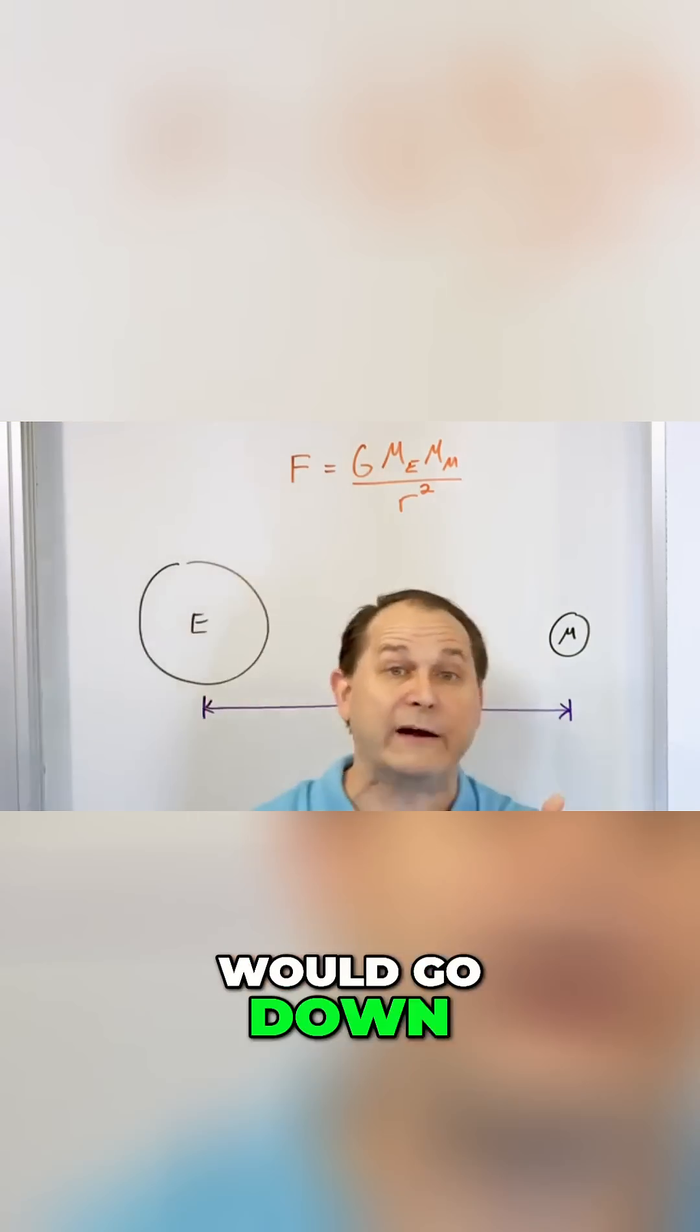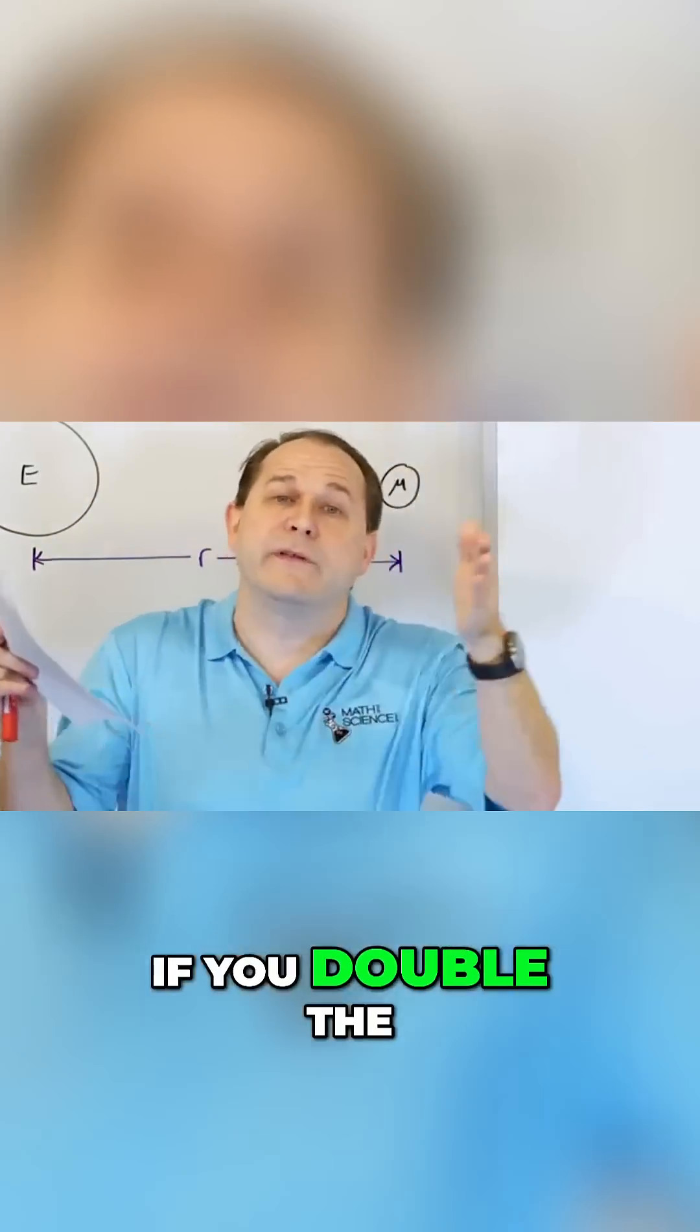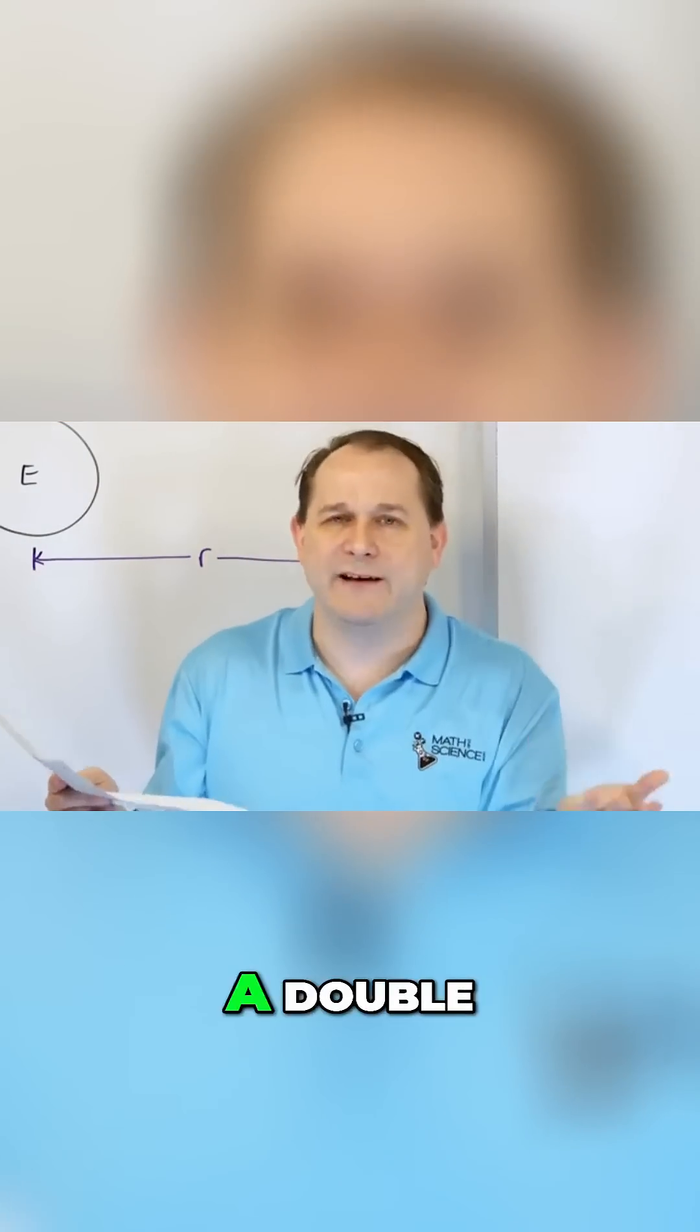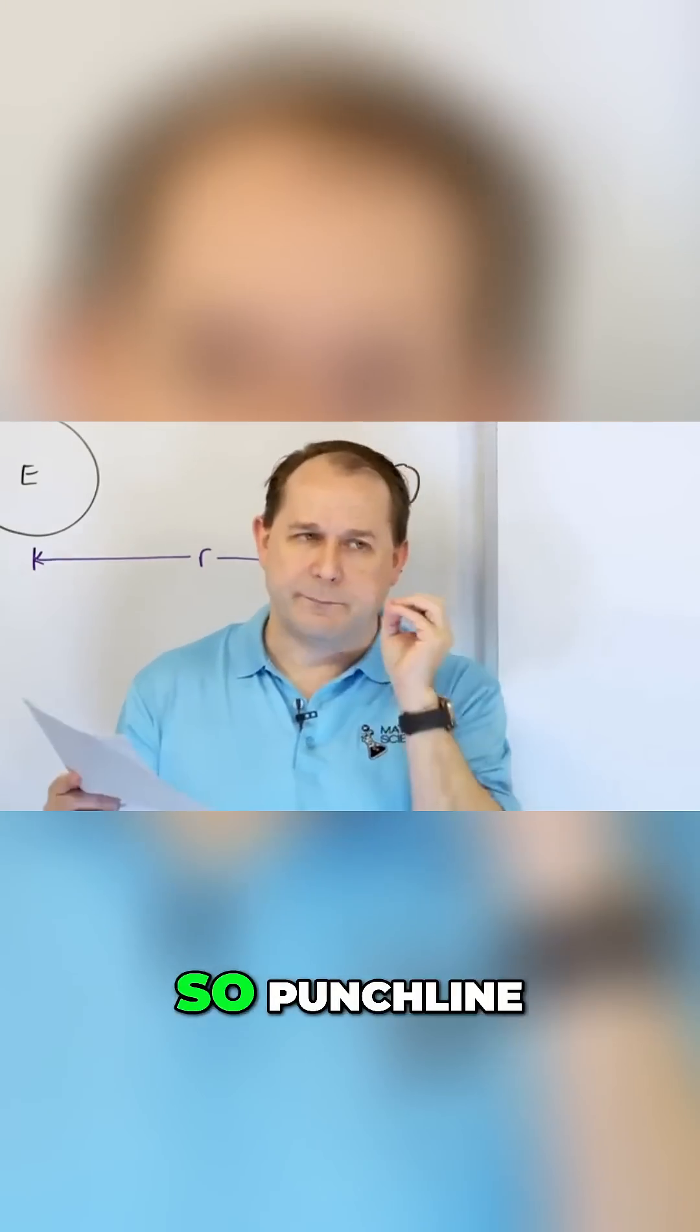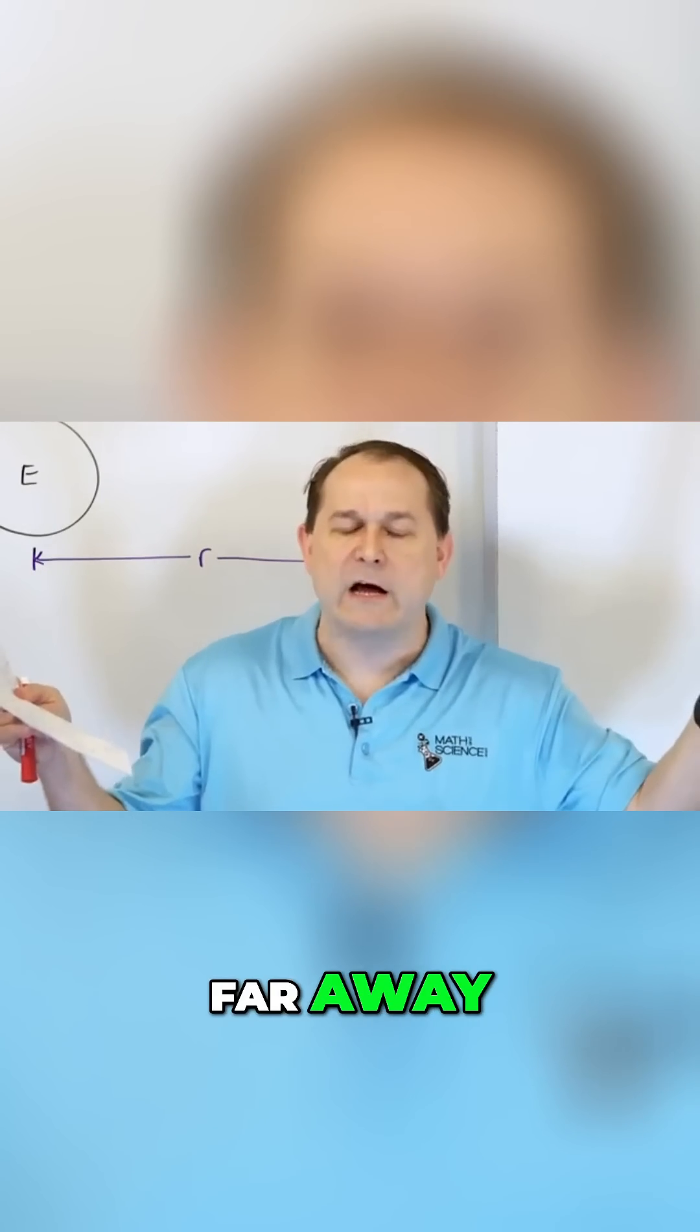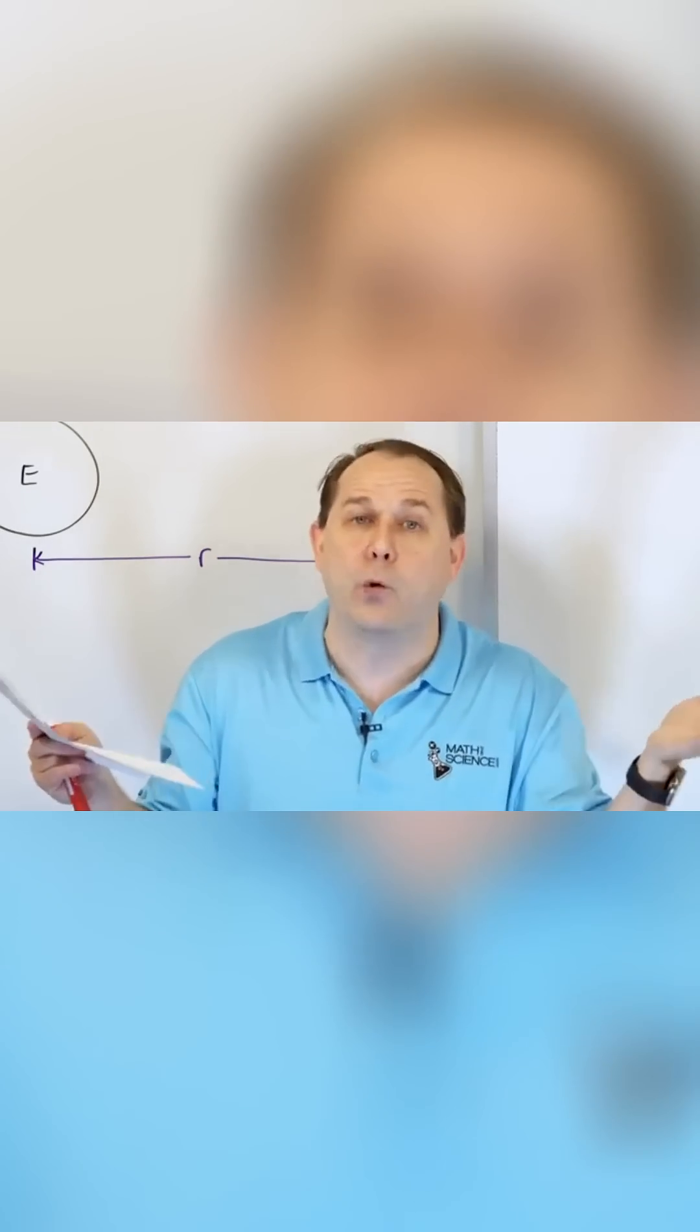So the gravitational force would go down four times. Because R is squared, if you double the distance between the objects, then because you're squaring a double, you're really dividing by four. So punchline: if you make two bodies twice as far away, the gravitational force is not twice as weak, it's actually four times weaker.